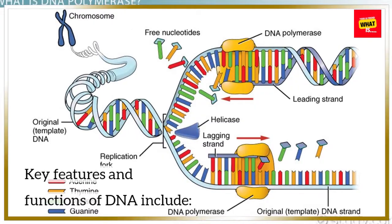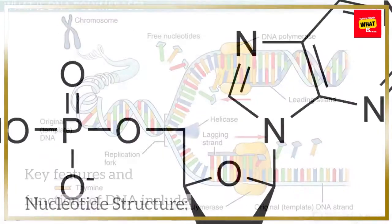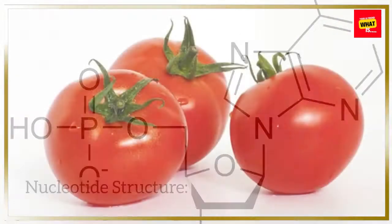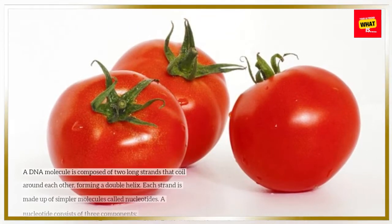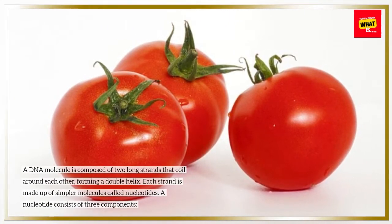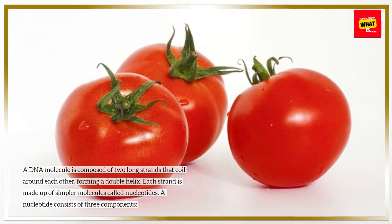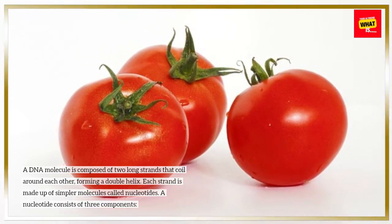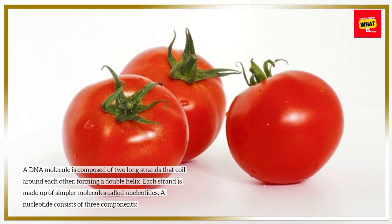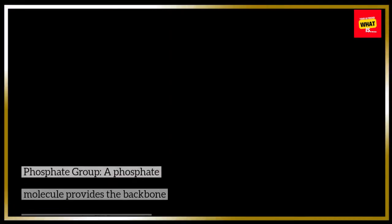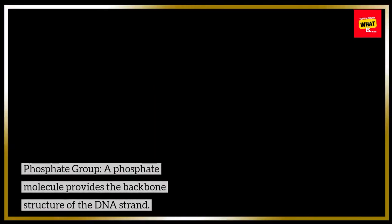Key features and functions of DNA include nucleotide structure. A DNA molecule is composed of two long strands that coil around each other, forming a double helix. Each strand is made up of simpler molecules called nucleotides. A nucleotide consists of three components. The phosphate group: a phosphate molecule provides the backbone structure of the DNA strand.